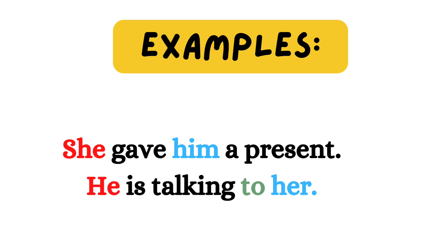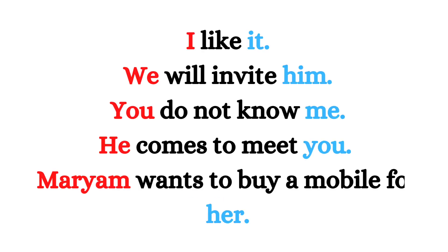Now we will see some more examples of subject and object. I like it. We will invite him. You do not know me. He comes to meet you. Mariam wants to buy a mobile for her. Here, I, we, you, he, and Mariam are the subjects because these are doing the action. When we look at it, him, me, you, and her — these are the objects because these are receiving the action.